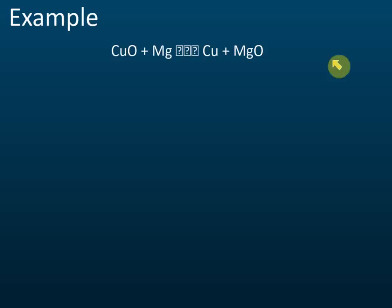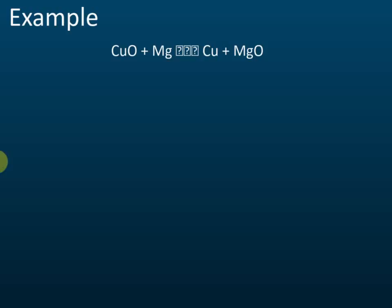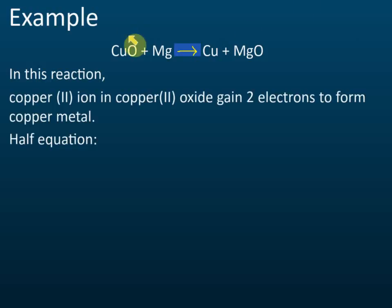Let's look at this example: copper oxide reacts with magnesium to form copper and magnesium oxide. In this reaction, copper oxide contains copper ions and oxide ions, and magnesium oxide contains magnesium ions and oxide ions.